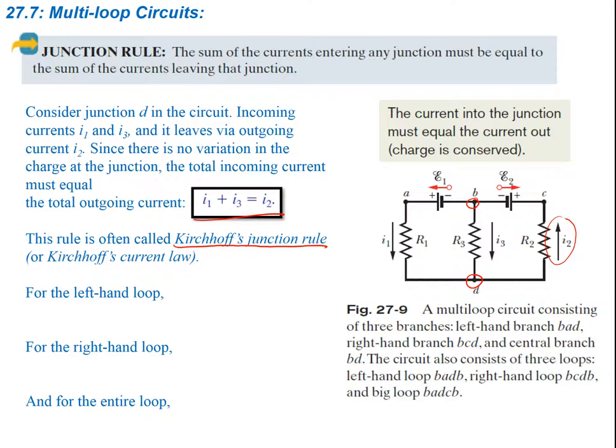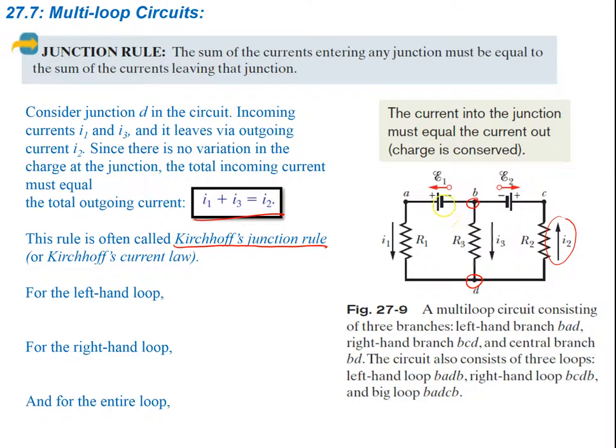Let's look at what this means when we're writing our equations. Looking at this left-hand loop — there are actually three loops in the circuit: this loop here, this loop here, and the big loop all the way around. We're going to first look at this left-hand loop, where the current is flowing in this direction.